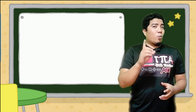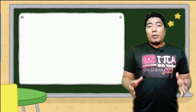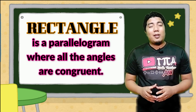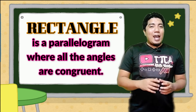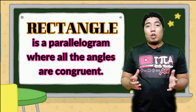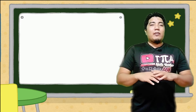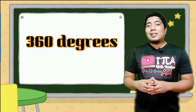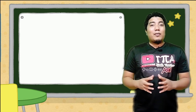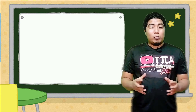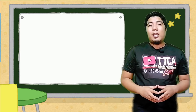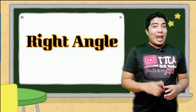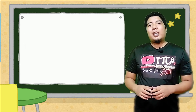So what is a rectangle? A rectangle is a parallelogram — and of course it is a quadrilateral — in which all its angles are congruent. Since the total measurement of a quadrilateral is 360 degrees, the angles of a rectangle will always be equal to 90 degrees, meaning right angles.